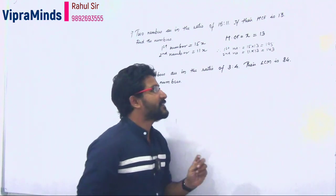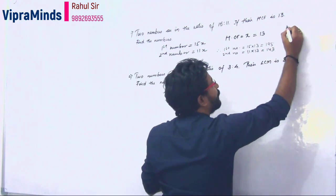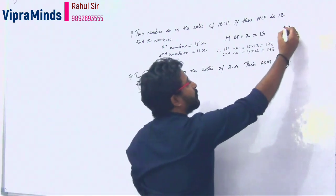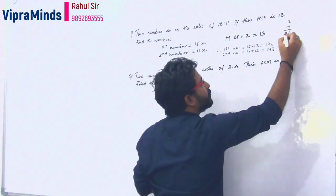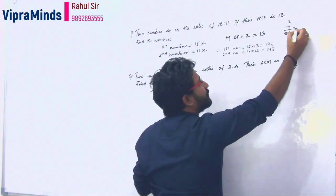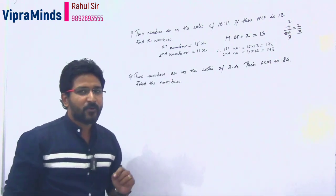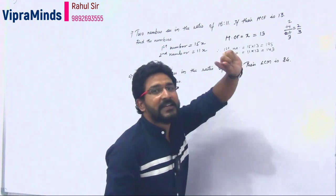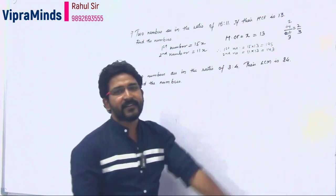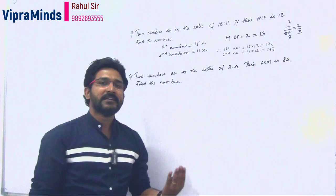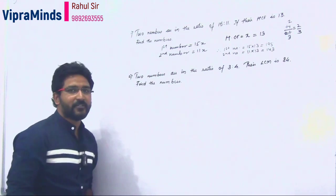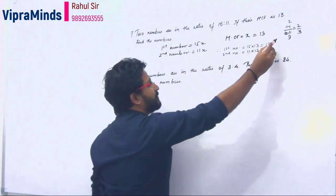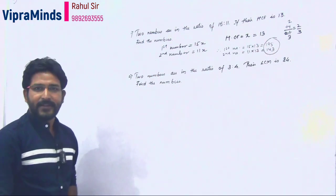For practice: if we take 14 and 21, what is the HCF? 14 is 7 into 2, and 21 is 7 into 3, giving the ratio 2 by 3. Since 2 by 3 cannot be simplified further, it is the lowest form. So the HCF is 7. This is one way to find the HCF. The answer to our question — the two numbers — is 195 and 143. Hope you have understood.